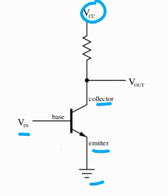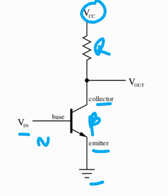connected to the supply voltage VCC through a resistor R. When you have a small signal applied to the input side of the circuit, the base-emitter junction gets forward biased, so there is a current called base current that flows in the input side of the circuit.